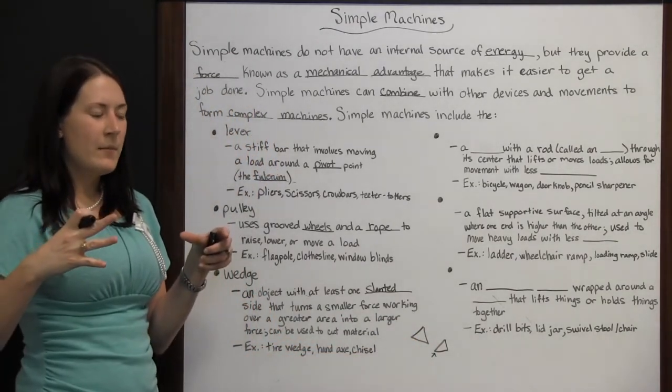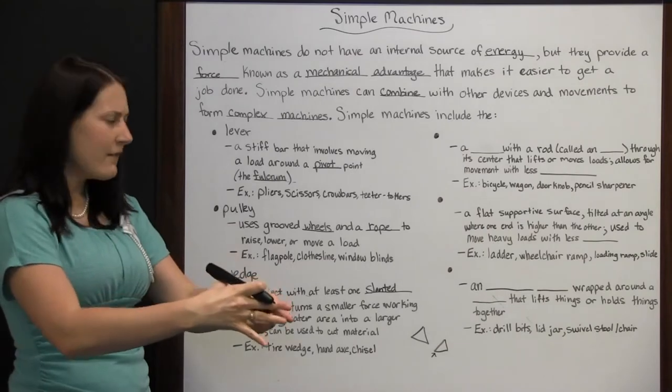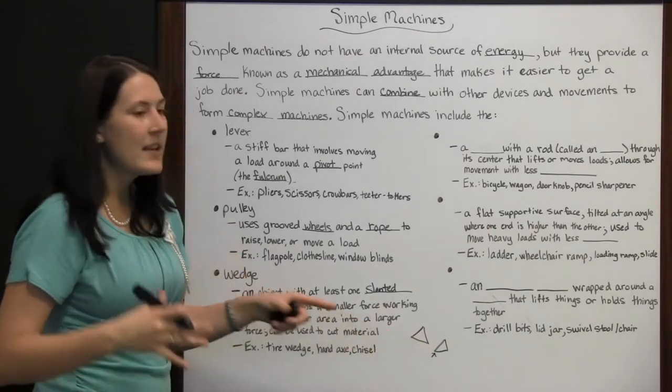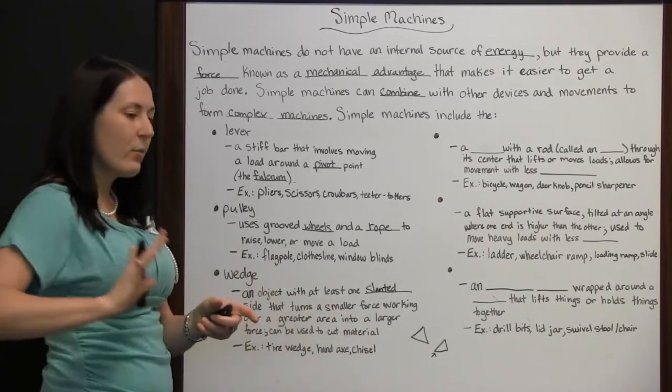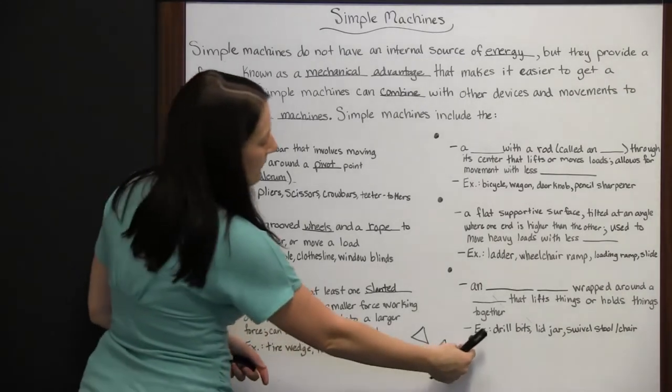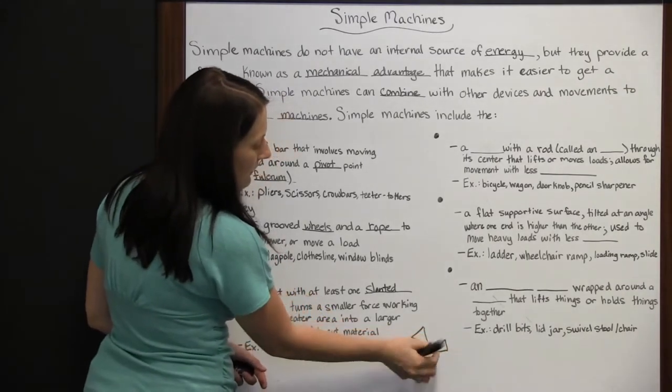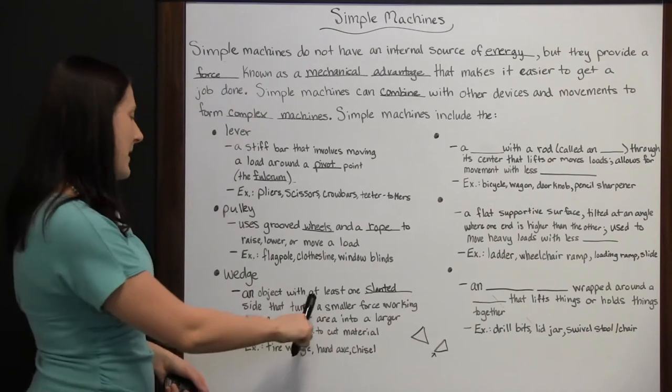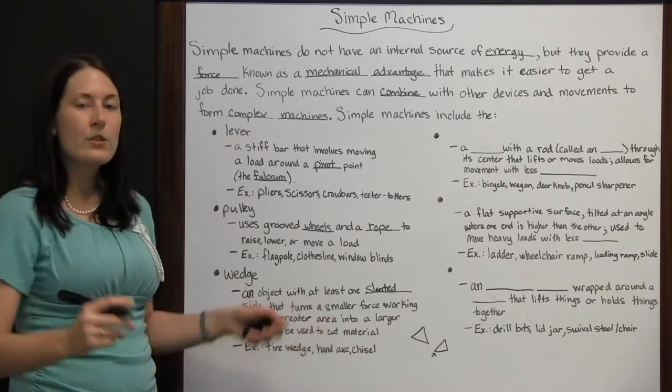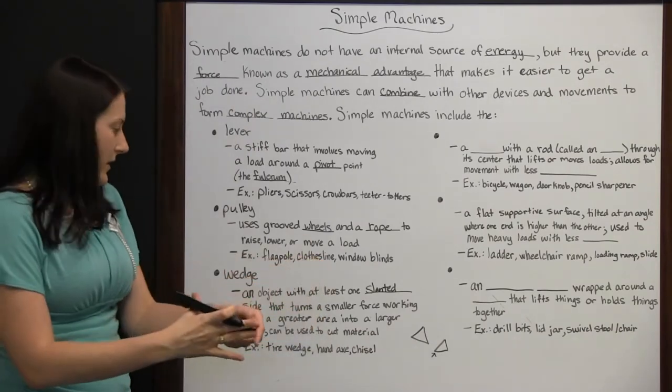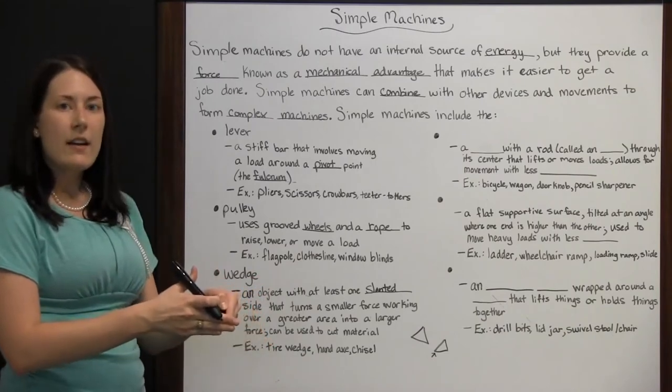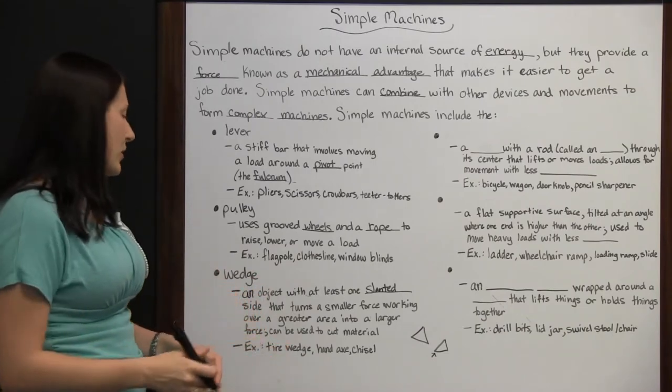It kind of focuses all that force onto the very end where the angled part is away from where the force is. If you apply force here, it's all going to focus down at that point. That's what it means by the smaller force over a greater area being focused into this one small area, but a much larger force there.